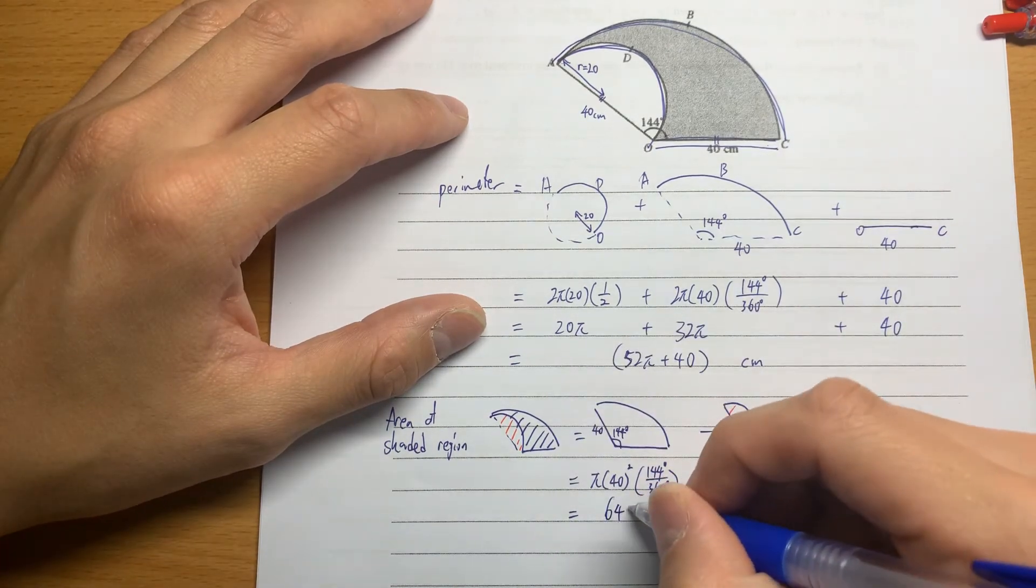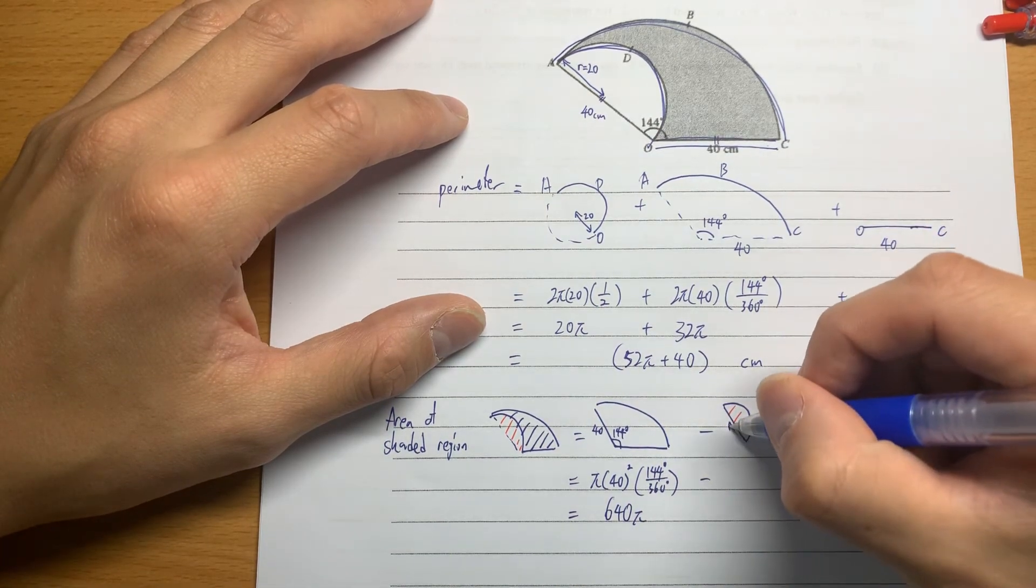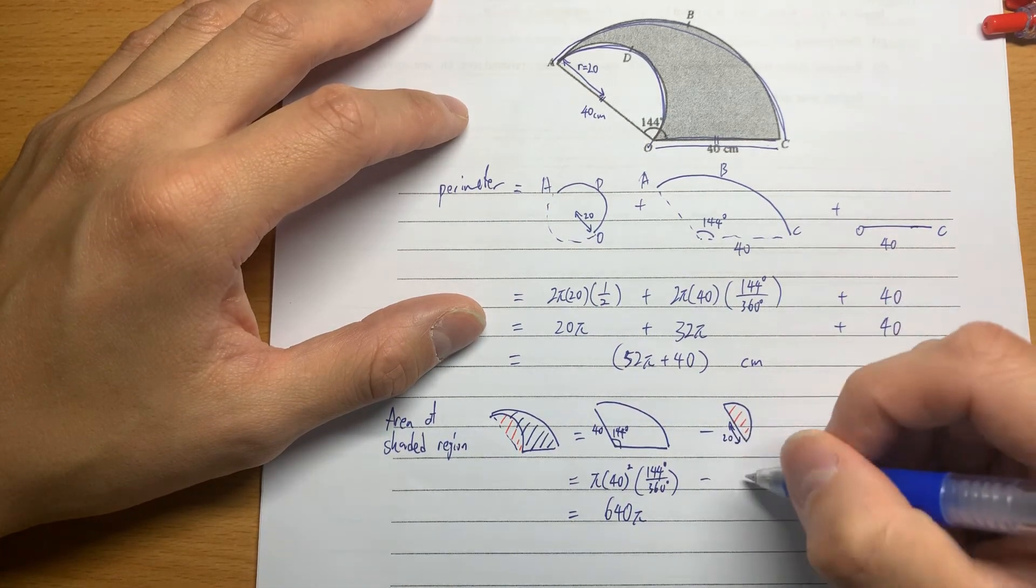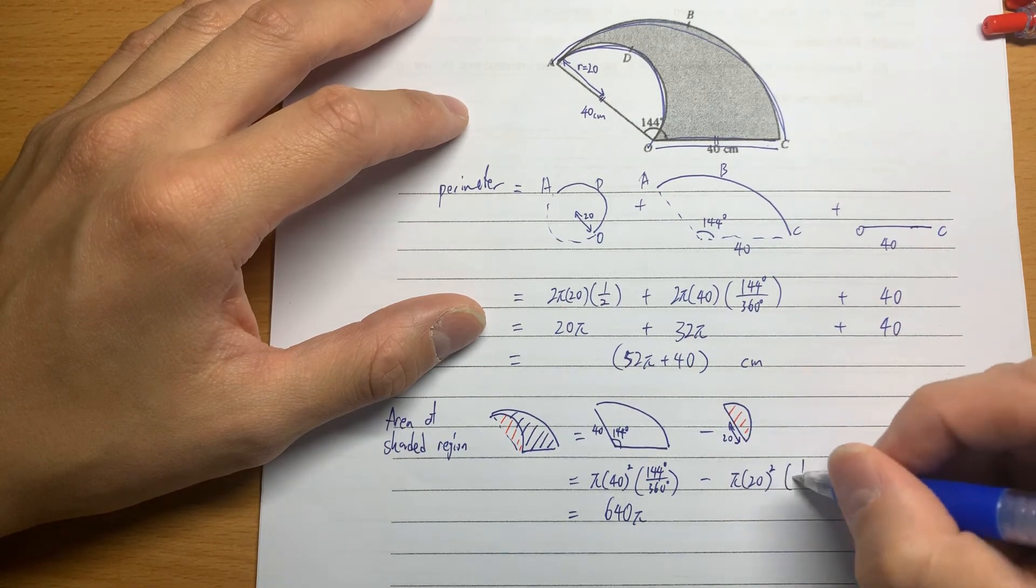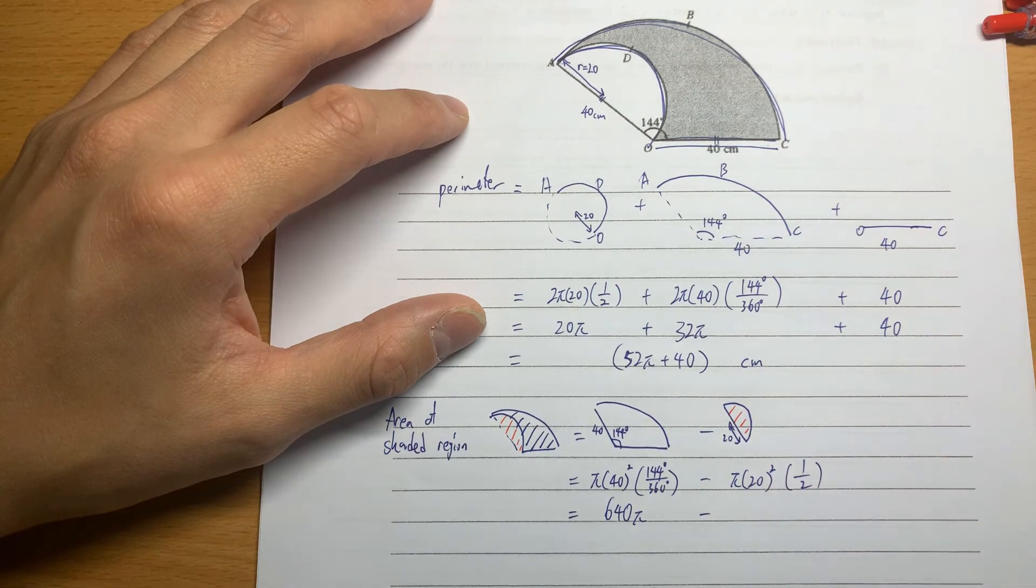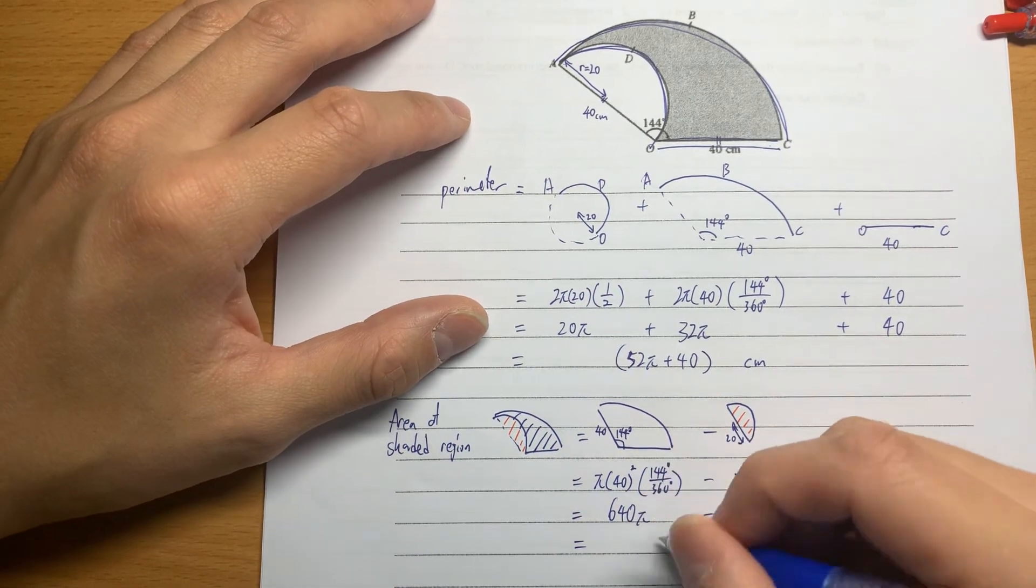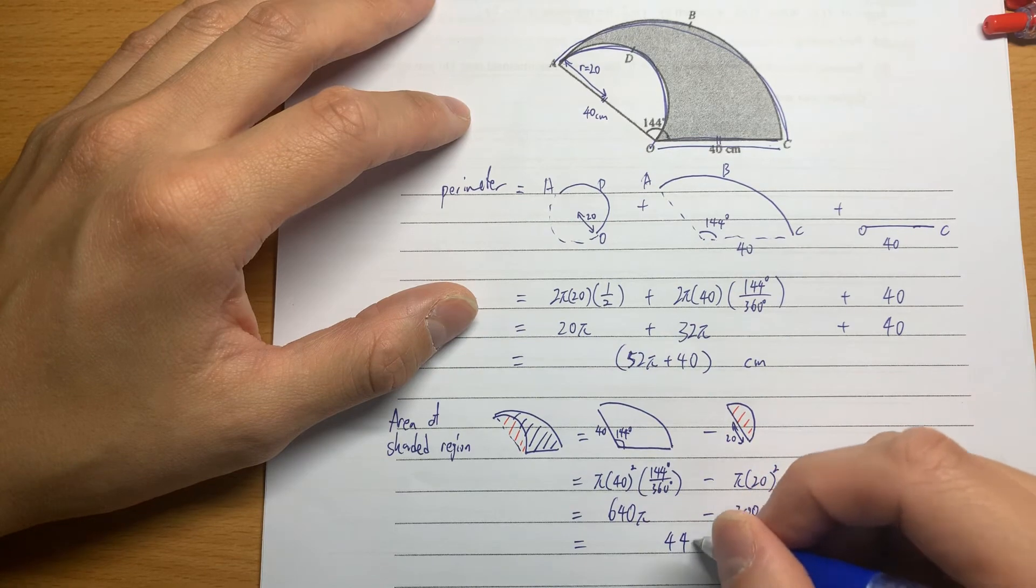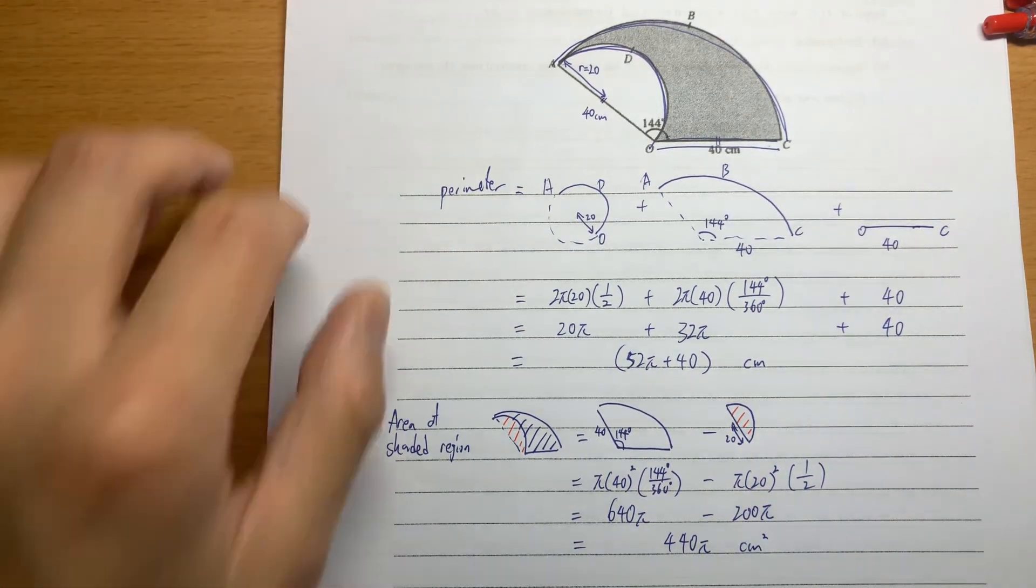And then minus - don't forget the radius here is 20 - so it is πr² and then it's just half, so it's 200π. That's why the answer is 440π cm².